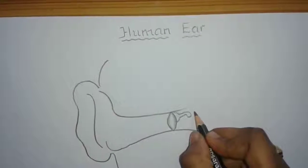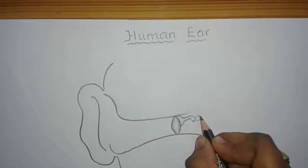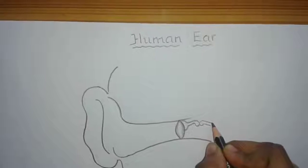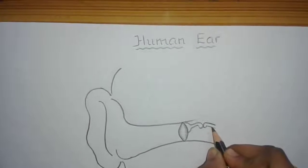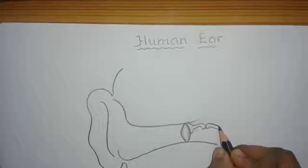The second smallest bone of the middle ear is incus, which is just opposite to that of the malleus. Draw the structure like this.